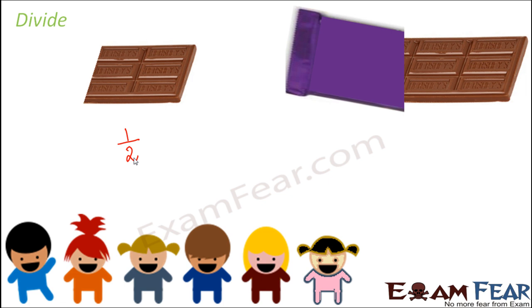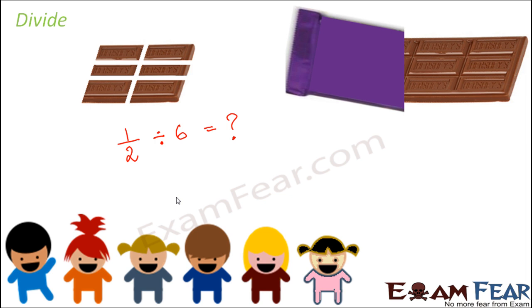Suddenly, six of your friends came in and said they wanted to have the chocolate. Now you need to divide this half of the chocolate amongst six of your friends. The result you get on division signifies what fraction of the chocolate each of them gets — that is, what part of the total chocolate each friend receives. So the question is: how do we divide? That is what we are learning here.